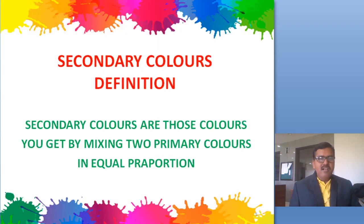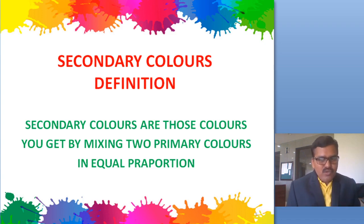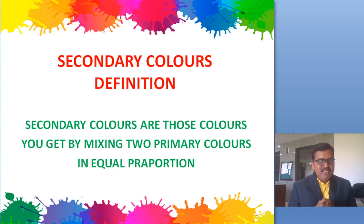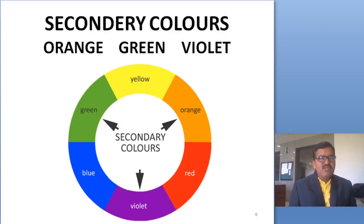And then we call it secondary colors. The secondary colors definition: secondary colors are those colors you get by mixing two primary colors in equal proportions. On the front of your display, there are secondary colors: orange, green, and violet.